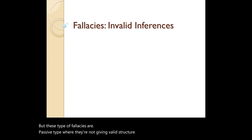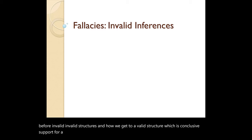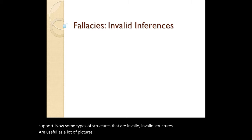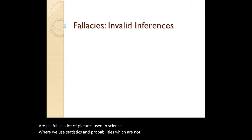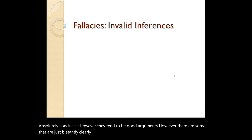We talked a bit about invalid structures and how we get to a valid structure, which is conclusive support for a particular conclusion, versus invalid structures that do not give conclusive support. Some types of invalid structures are useful — a lot is used in science, where we use statistics and probabilities, which are not absolutely conclusive, but tend to be good arguments. However, there are some that are just blatantly, clearly not good arguments — just mistakes in reasoning. These are the types we're going to discuss right now.